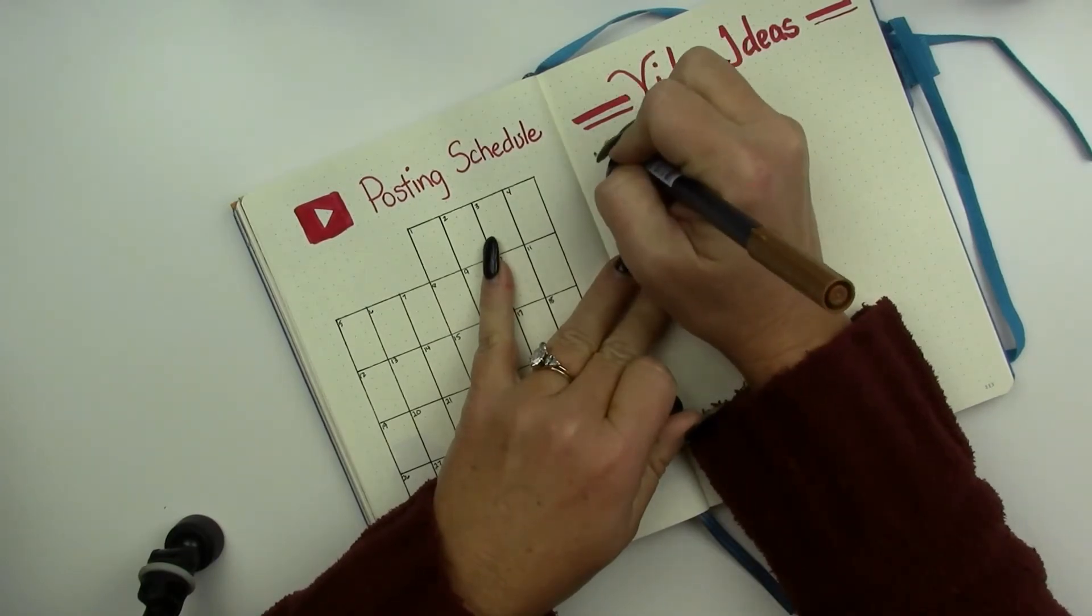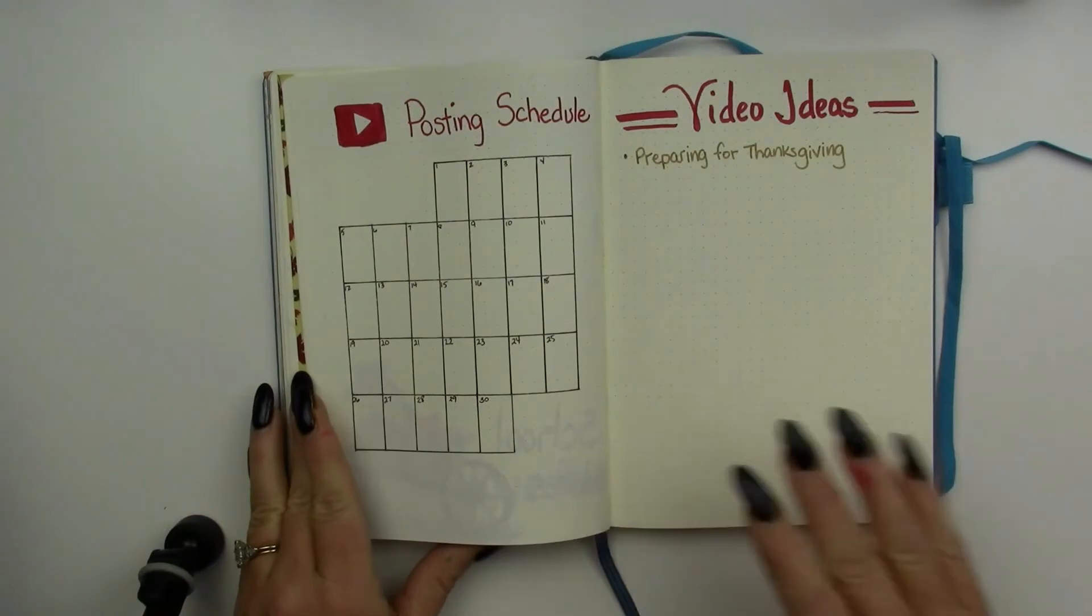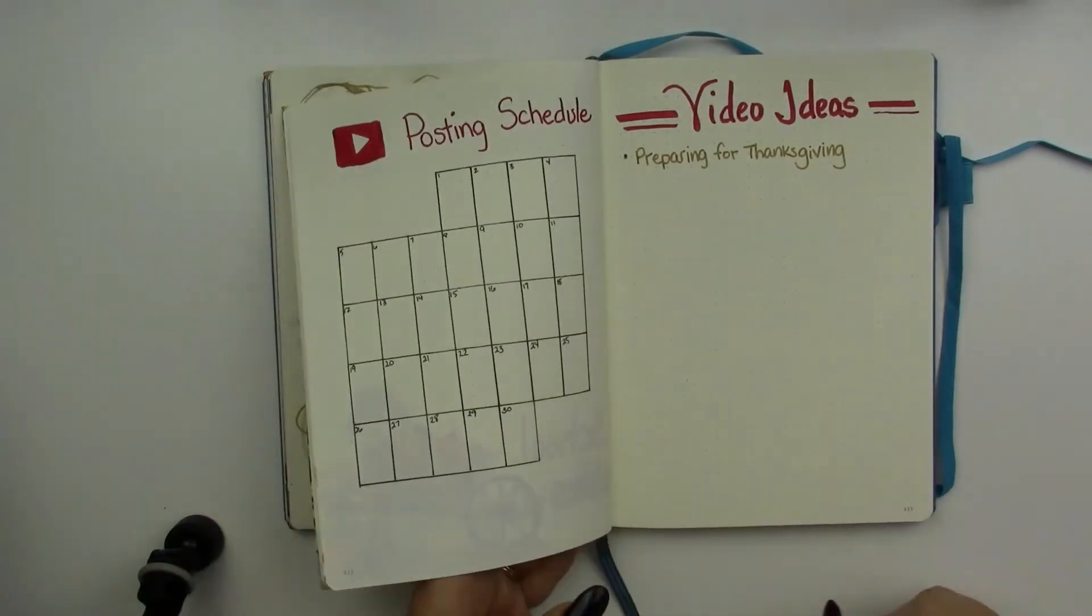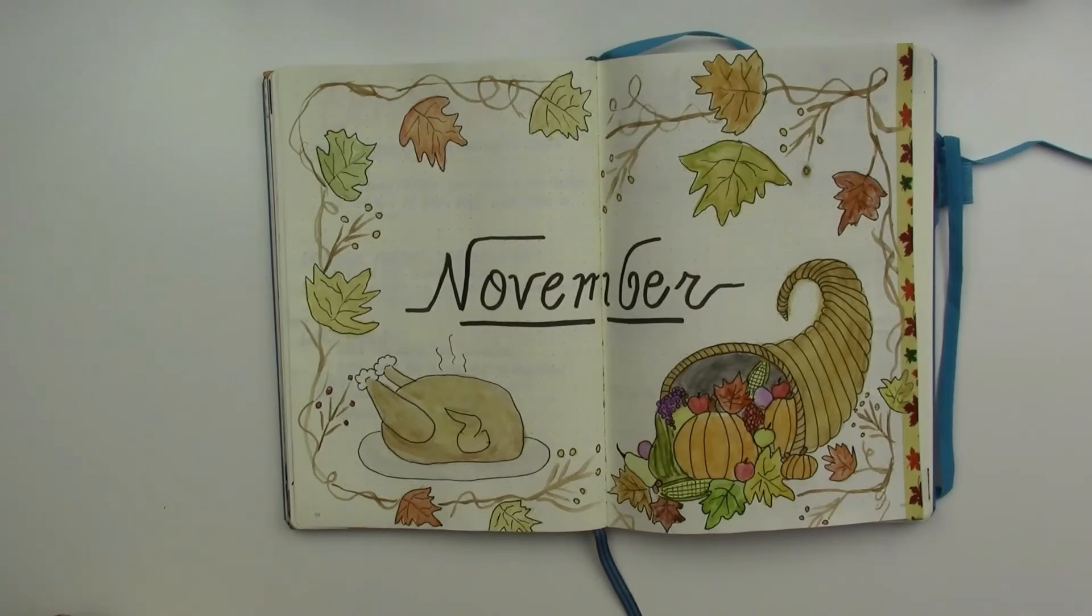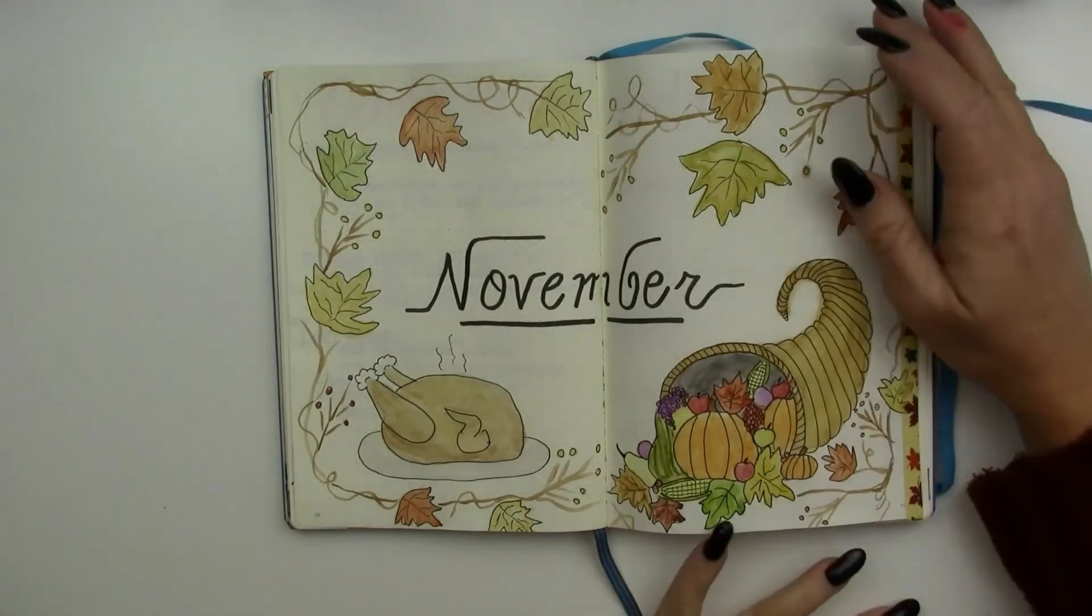And then my last two pages will be for my channel. So for a final flip through, here we go. I will be doing a cornucopia. I think it was my second weekly layout for November. So if you'd like to see how that was drawn, then be sure to subscribe and come back.